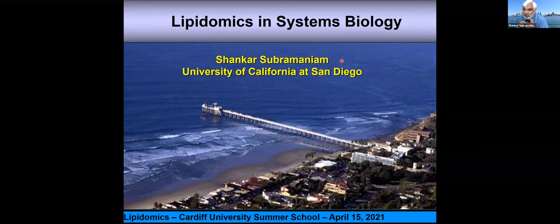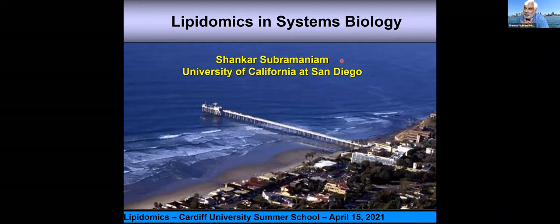Remember this: the cell does not discriminate between signaling, metabolism, transcription, and regulation. The cell functions as an integrated unit — it's a system. So we are going to deal with this as a system. I'm going to focus very heavily on lipids, using one mammalian cell as an example, and walk you through how measurements of lipids can give you biological insights. Examples are the best way to show how you can build a systems view of things.